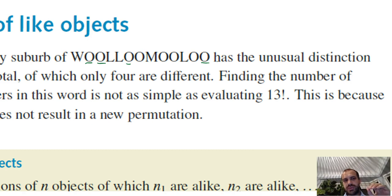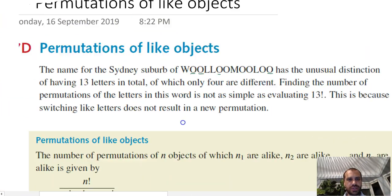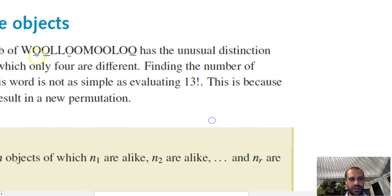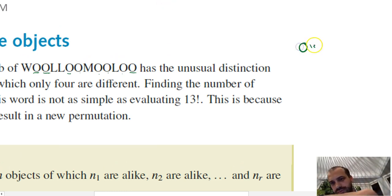First question we're going to ask when we come to these questions is ask ourselves, how many different ways could I swap up the like objects so that somebody wouldn't be able to tell the difference? So here, I can swap all of the O's, 1, 2, 3, 4, 5, 6, 7, 8, 8 factorial ways. So O's, 8 factorial ways.